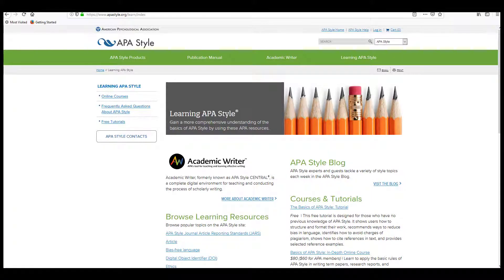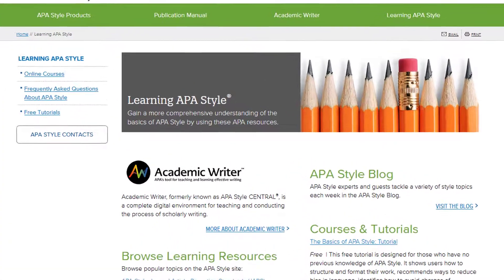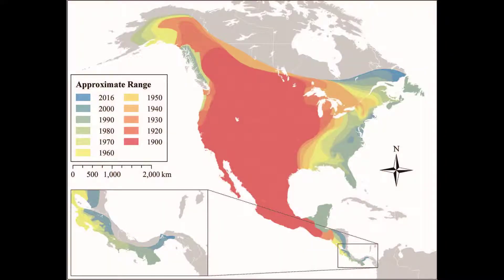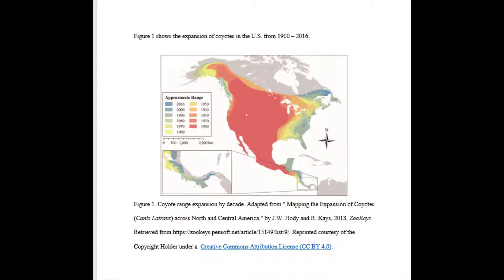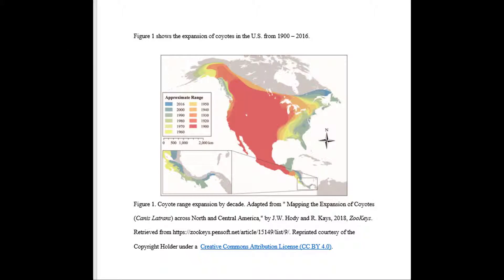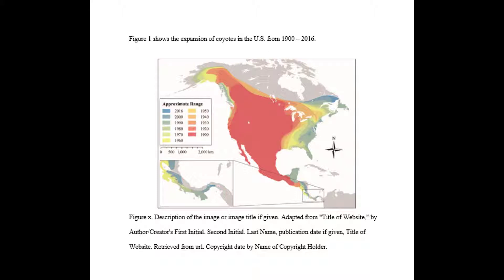APA also has specific guidelines for inserting a graph, table, image, or figure into your work. For example, if we wanted to insert an image about the expansion of coyotes in the United States into a paper, the guidelines say it's important that you mention the figure in the text — something like, "Figure 1 shows the expansion of coyotes in the U.S. from 1900 to 2016." Then the citation for this figure would go underneath the image. First provide a caption or phrase that describes what the figure is, then follow that with a brief explanation so a reader could clearly see what the figure conveys.